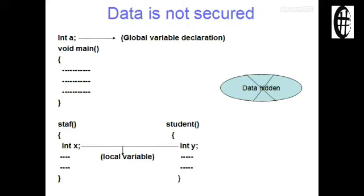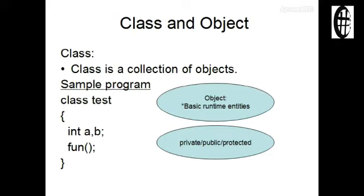The OOPs concept uses classes and objects. A class is a collection of objects. In a class, we can declare private, public, and protected access specifiers. This way, data and member functions are secure. In C language, data is not secure. This is the key concept of OOPs.